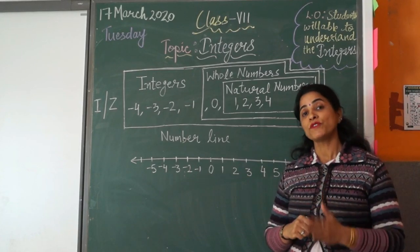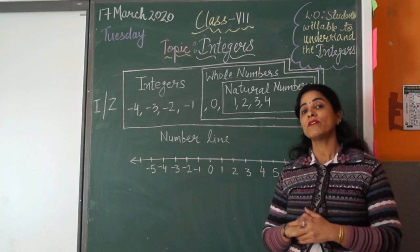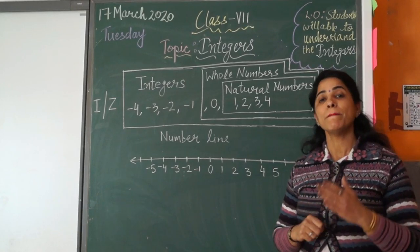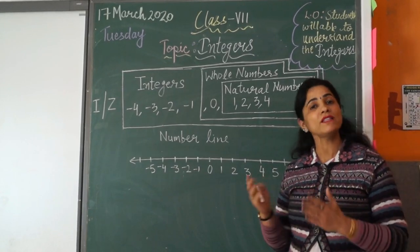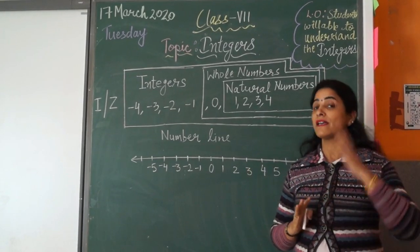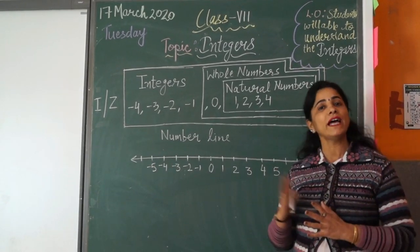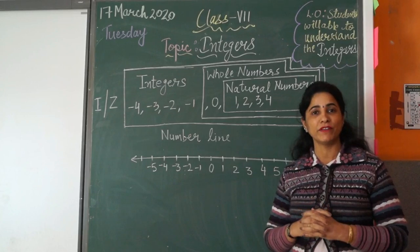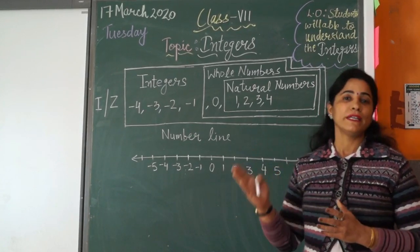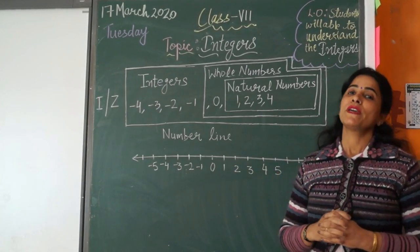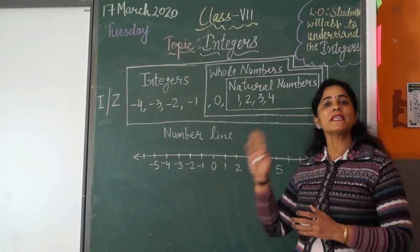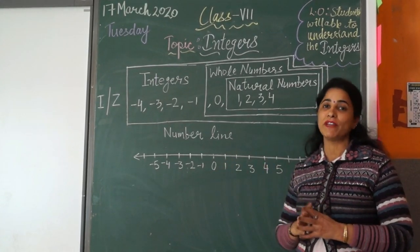While the floors which are below the ground level are represented through minus 1, minus 2, and so on. So what are these? These are positive and negative numbers. So here we have the concept of integers, wherein we use positive numbers and negative numbers.